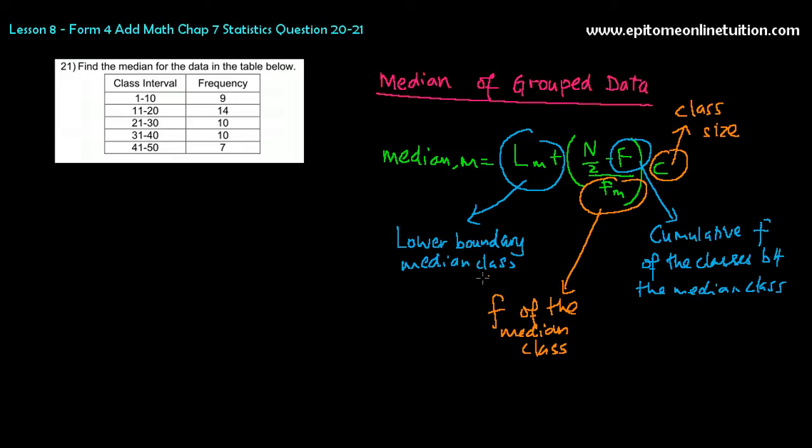First, you need to find the lower boundary of median class. That means you have to find the median class. To find the median class, you have to find the total frequency. And here's the total up. So, sum of frequency, if you add them up, is 50.